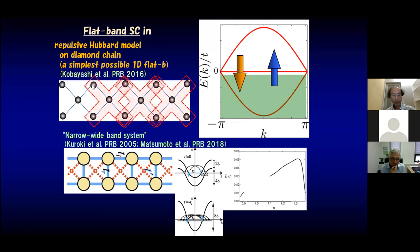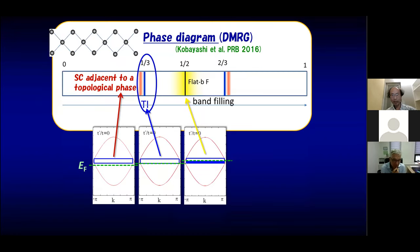How about entanglement? If we have a flat band, we have overlapping Wannier states. In the case of a diamond chain, these are the Wannier states and they overlap with each other. This is the phase diagram obtained with DMRG. At band filling less than one-third, the flat band is completely full and the lower dispersive band is partially filled — the ground state is a topological insulator. So this superconductivity sits right adjacent to a topological phase.